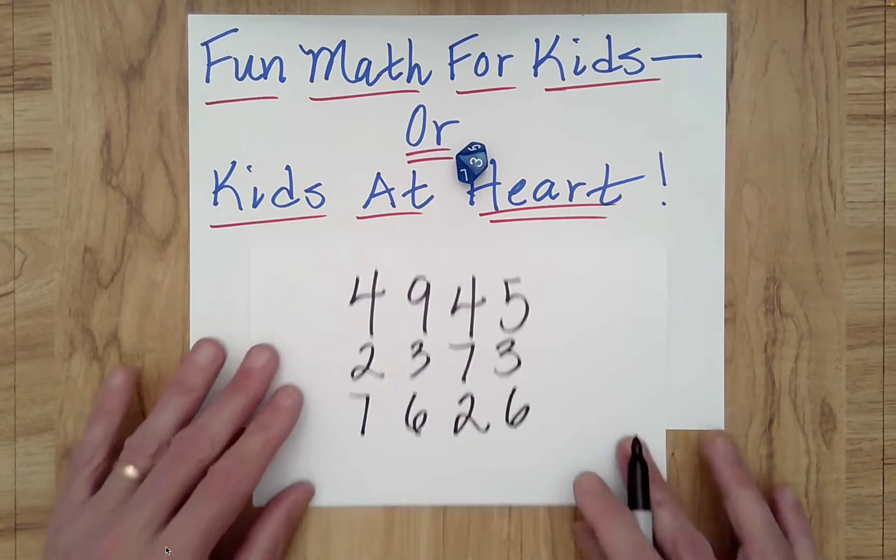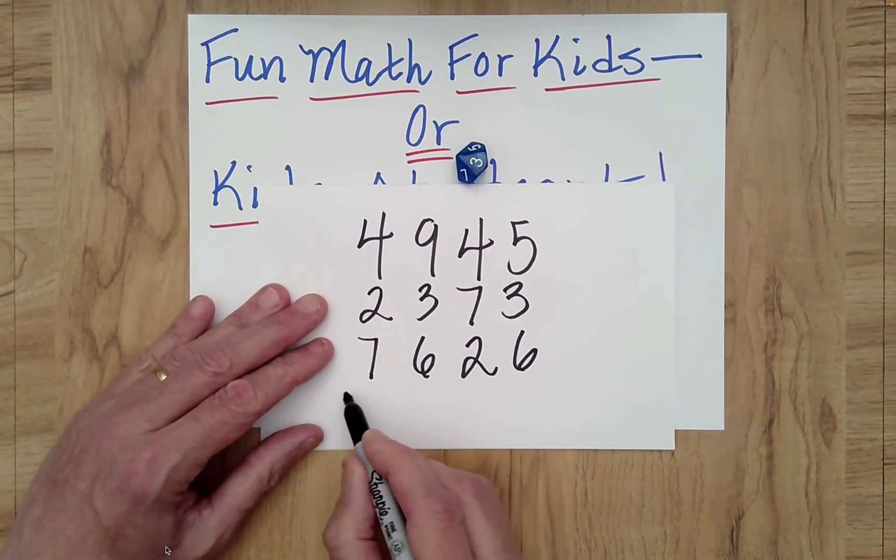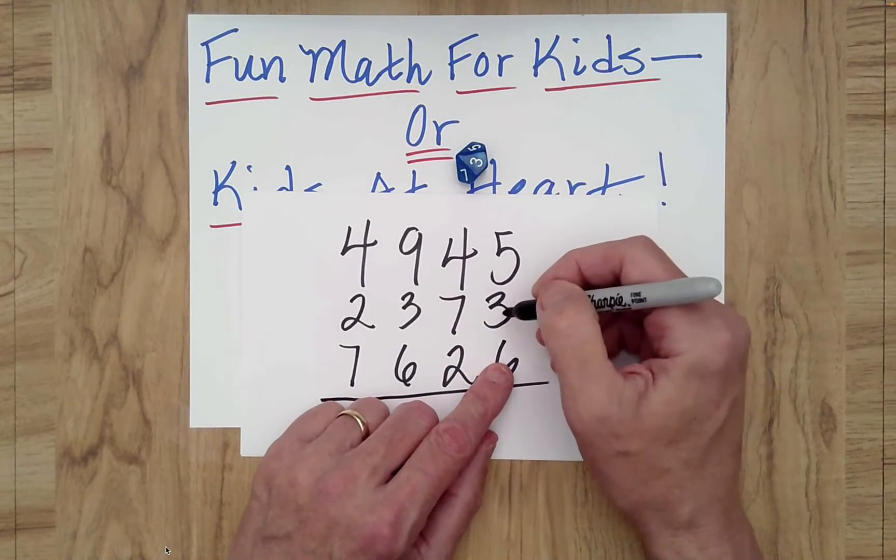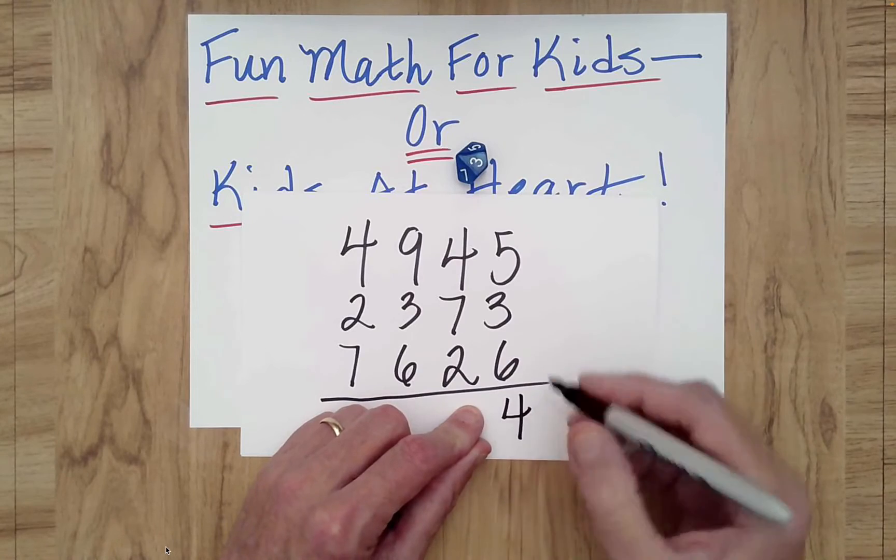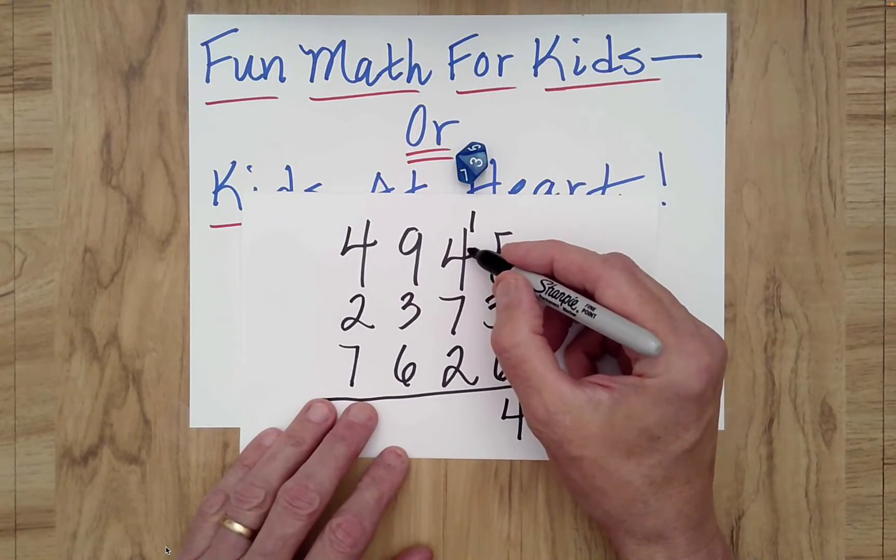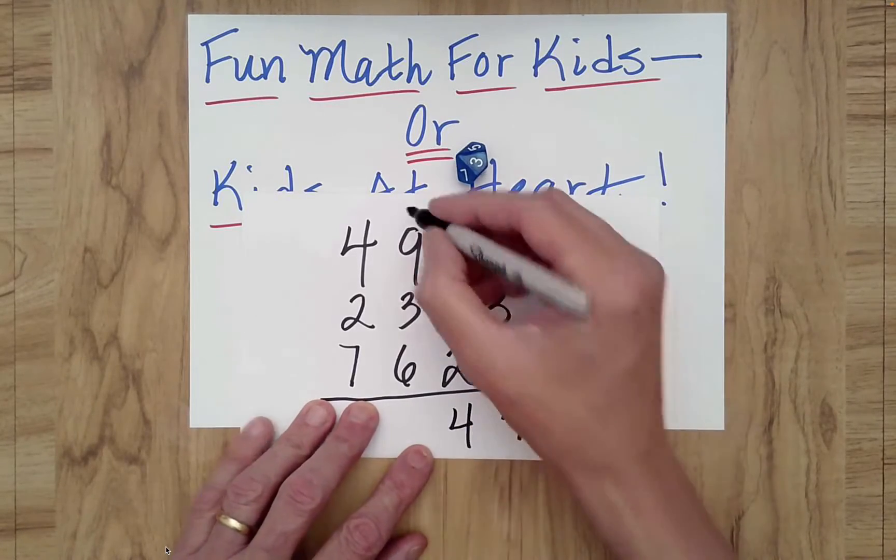Now what I need you to do is I need you to add up these numbers and come up with a total for all three numbers being added. So let's do that together. So five plus three is eight, plus four is fourteen. Okay, carry the one. One plus four is five, plus seven is twelve, plus two is fourteen. Carry the one.